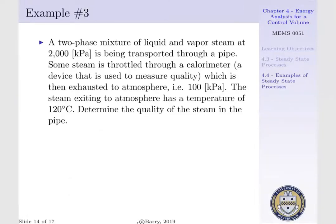Looking at example 3, imagine there is a two-phase mixture of liquid and vapor steam at 2,000 kPa being transported through a pipe. Some of the steam is throttled through a calorimeter. This calorimeter is able to measure quality. The exit of the calorimeter is exhausted to atmosphere at 100 kPa. The steam exiting the calorimeter to atmosphere has a temperature of 120 degrees centigrade. We are interested in determining the quality of steam within our pipe.